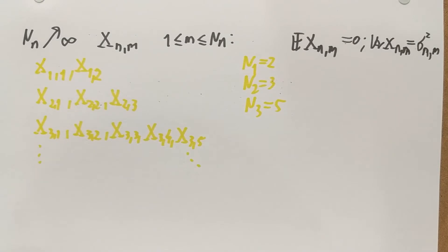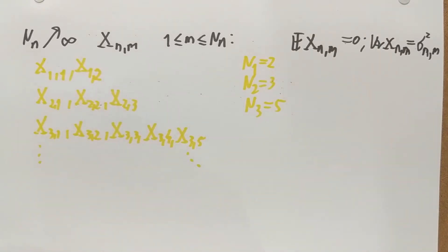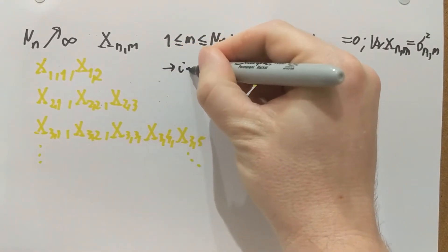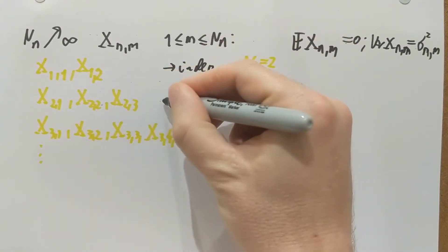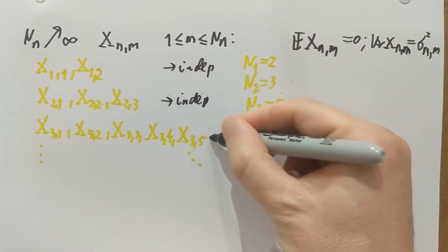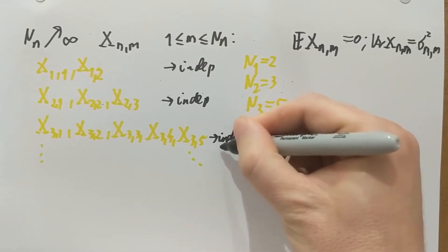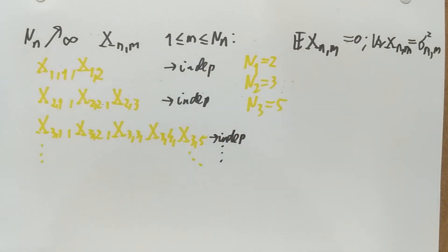However, what we need is that across a line — across a row of this table — the variables are independent. So these two are independent, these three are independent, these five are independent, and so on. Every row is a sequence of independent random variables.